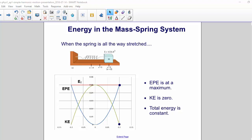When the spring is all the way stretched, elastic potential energy is at a maximum, kinetic energy is zero, and again, the total energy is constant.